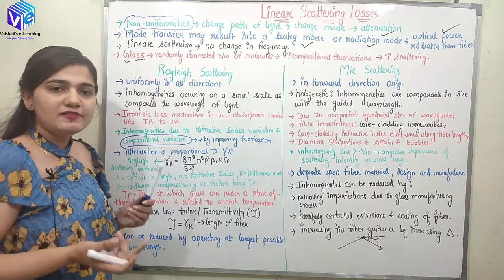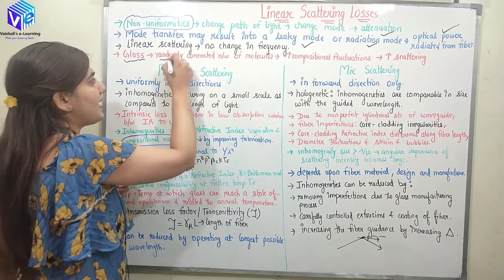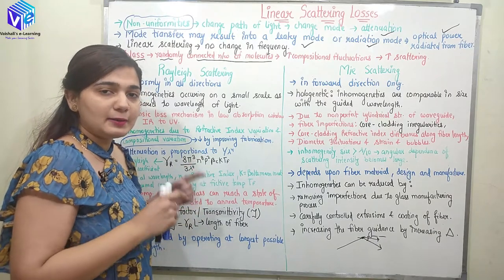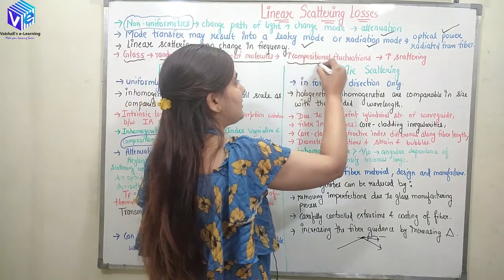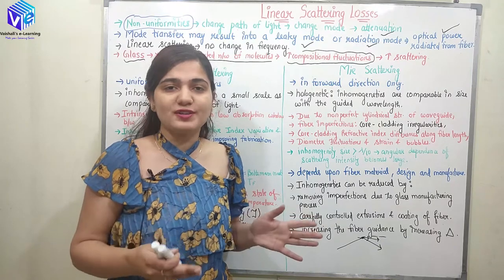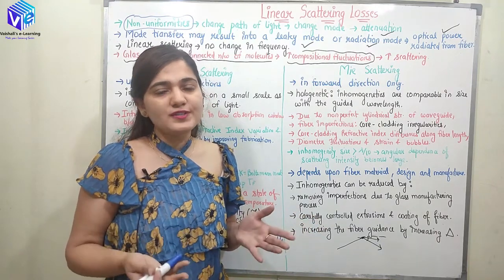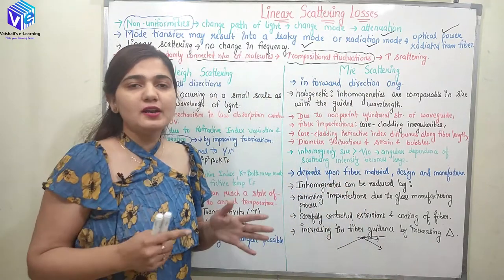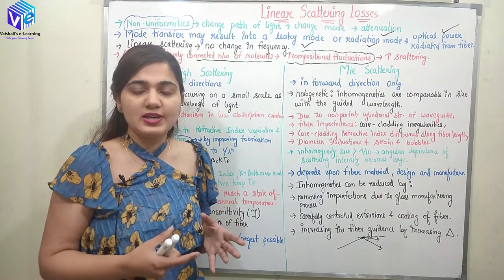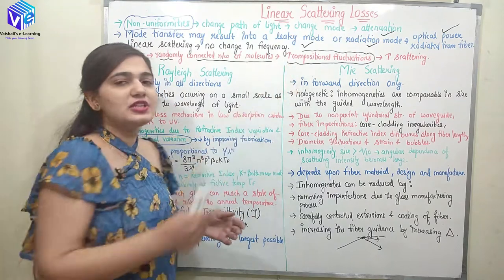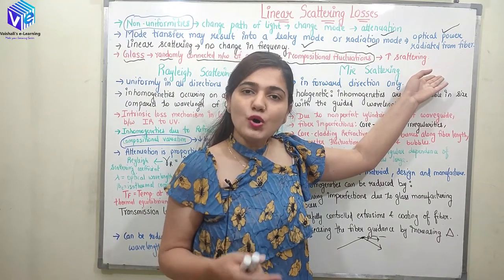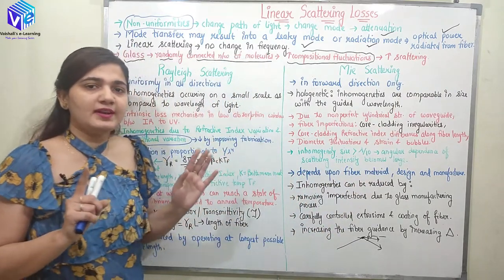The optical fiber is made up of glass. Glass is composed of a randomly connected network of molecules, which increases compositional fluctuations. Higher compositional fluctuations give more scattering. Comparing single-mode and multi-mode fiber: in multi-mode fiber I have more doping concentration, more compositional fluctuation, and therefore more scattering compared to single-mode fiber.